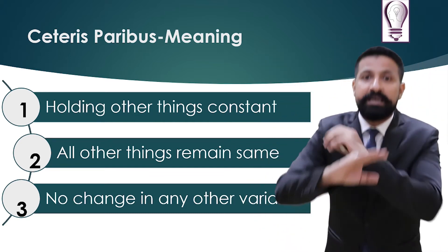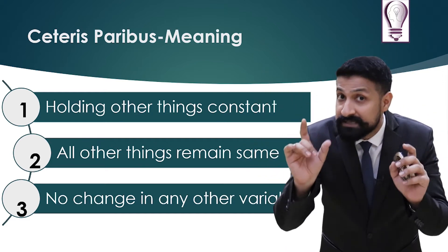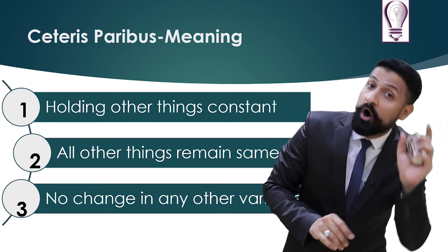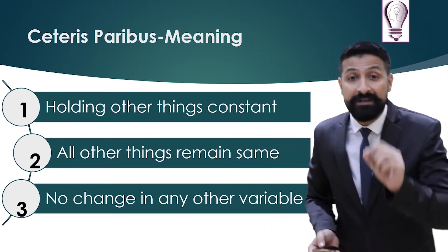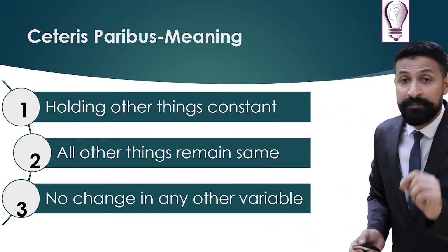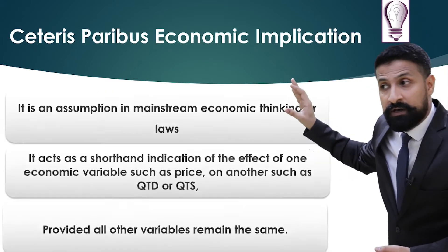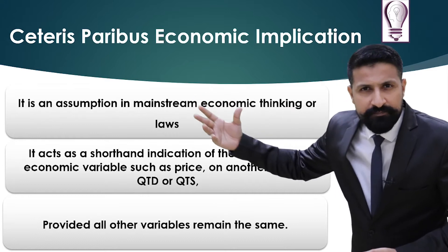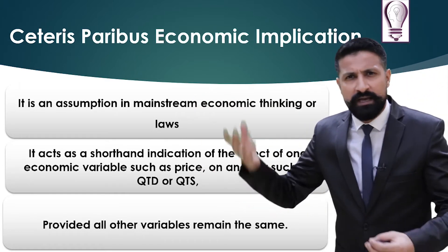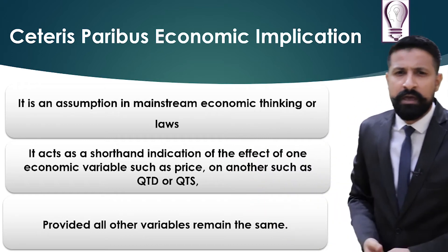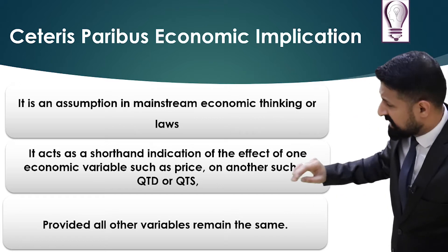No change in any other variable — this is the hidden meaning of the word ceteris paribus. It is actually an assumption of mainstream economic thinking. Mainstream economic laws include the demand law, supply law, equilibrium, and so on. Keep it in your mind: it acts as a shorthand indicator of the effect of one economic variable, such as price, on another economic variable.